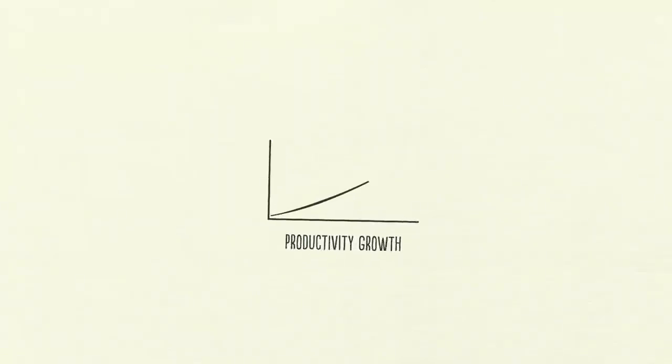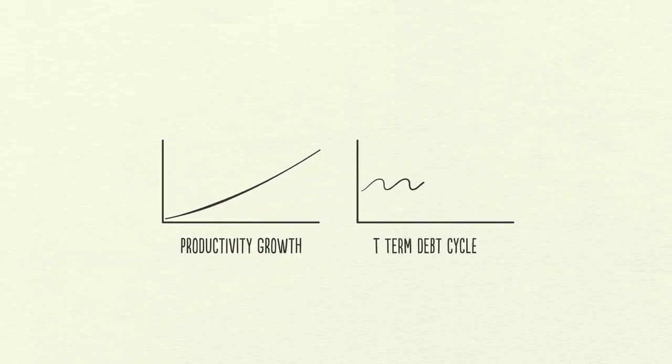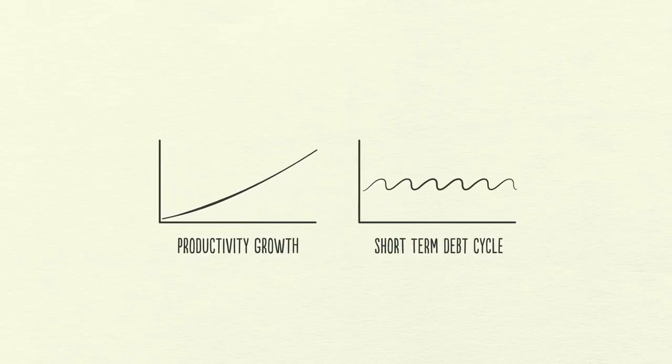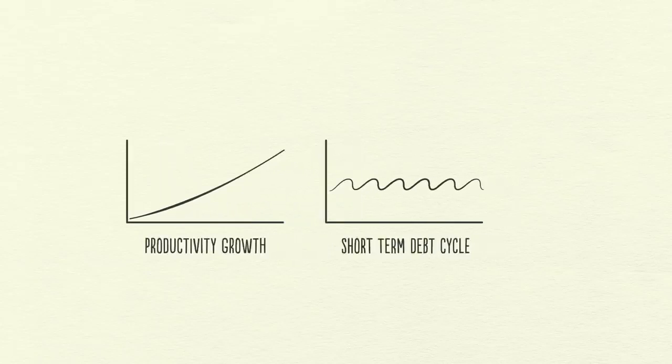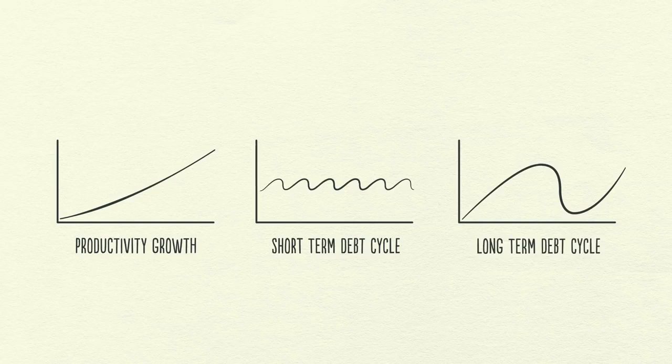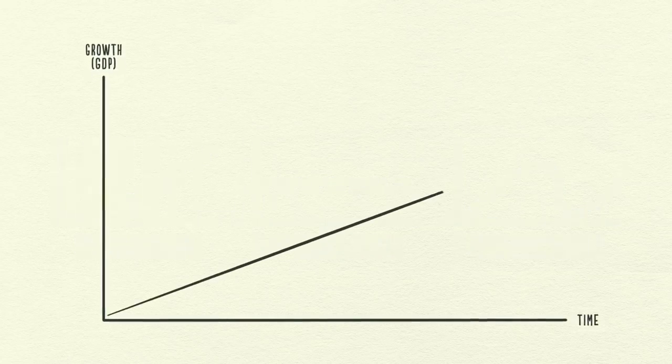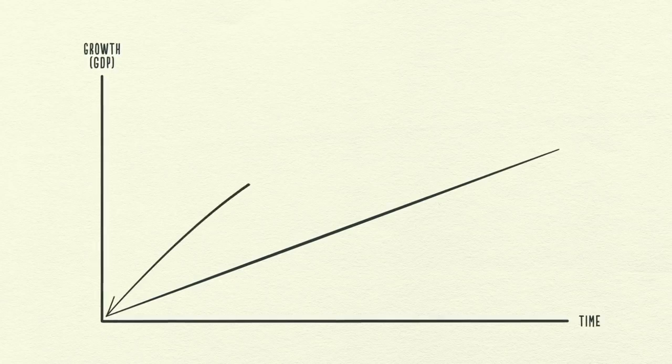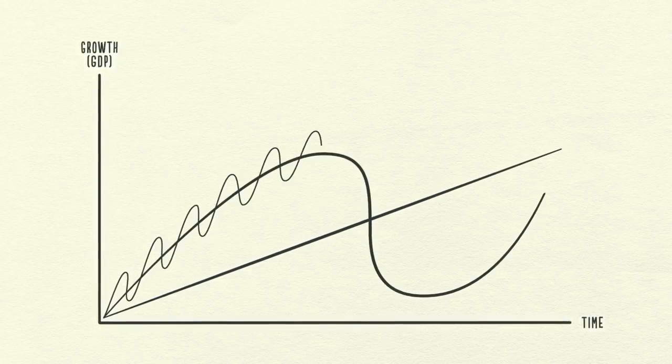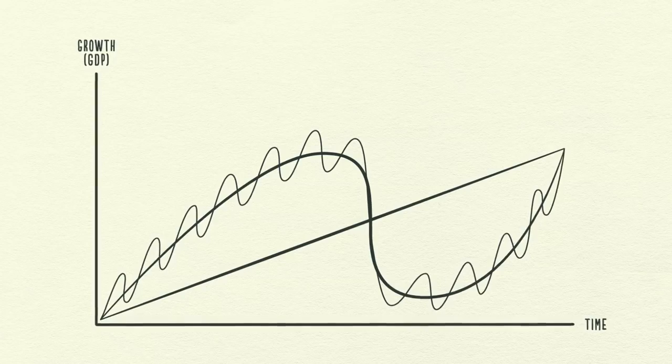And they create three main forces that drive the economy. Number one, productivity growth. Number two, the short-term debt cycle. And number three, the long-term debt cycle. We'll look at these three forces and how laying them on top of each other creates a good template for tracking economic movements and figuring out what's happening now. Now, let's start with the simplest part of the economy, transactions.